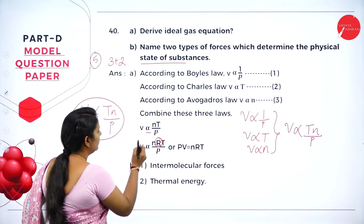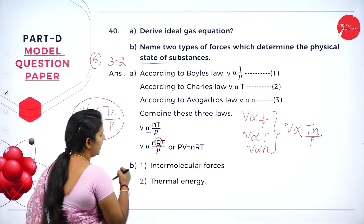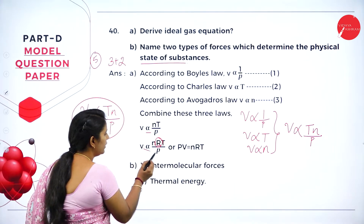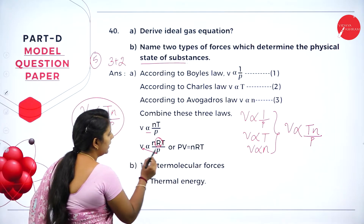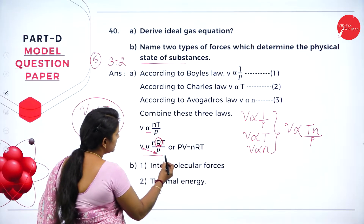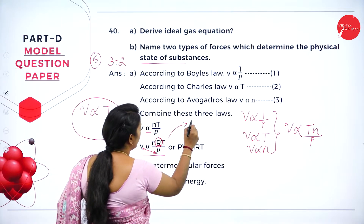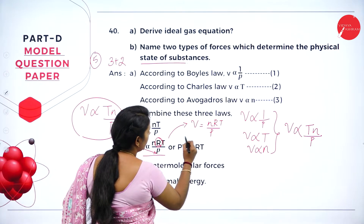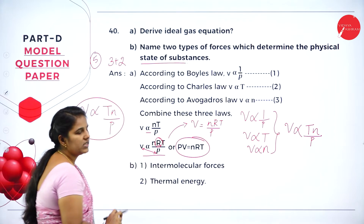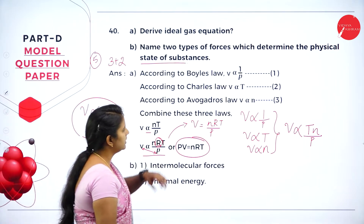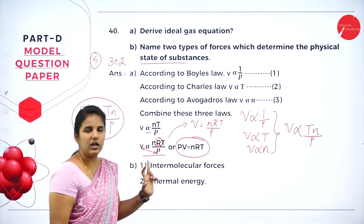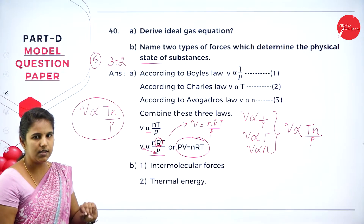To remove the proportionality, we introduce R (the gas constant), giving V = nRT/P, where R is the gas constant, N is the number of moles, T is the temperature, P is the pressure, and V is the volume. By cross multiplication, PV = nRT. This equation can also be written as V = nRT/P. Writing Boyle's law equation gives 1 mark, Charles' law 1 mark, and the final equation 1 mark — totalling 3 marks.